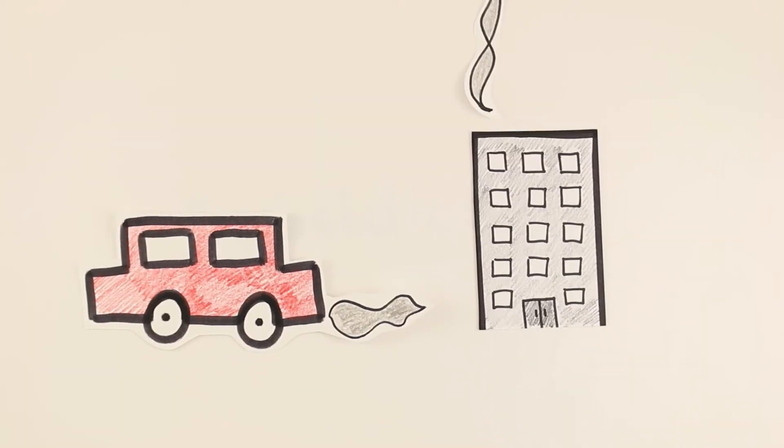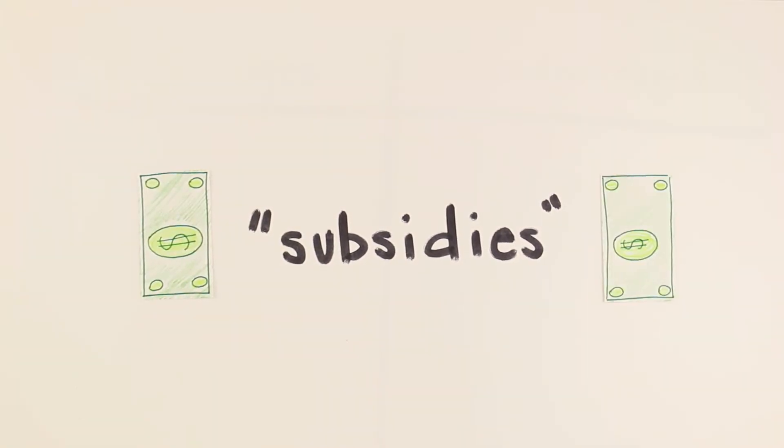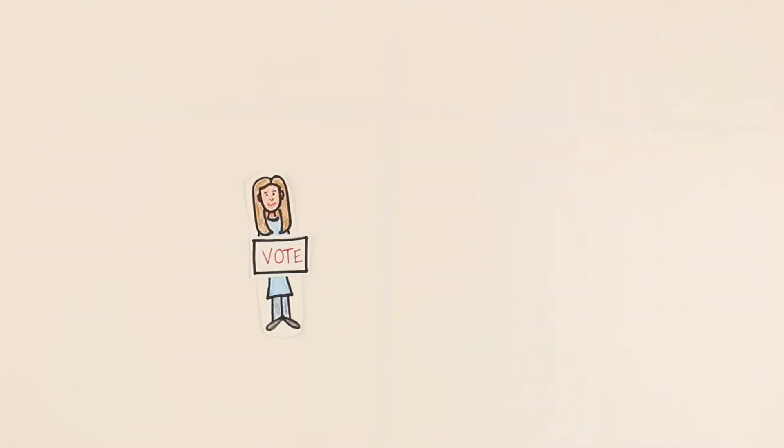The government also regulates air pollution from vehicles and factories. The federal government gives subsidies, in other words money, to farmers so that they can compete with farmers in other countries who also get government subsidies.